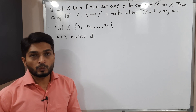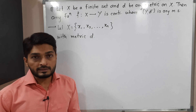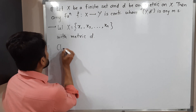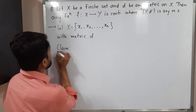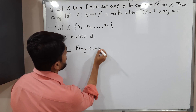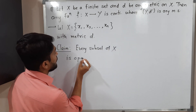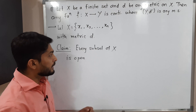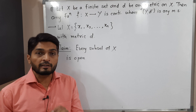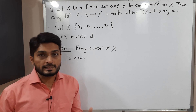Before proving this result we are going to prove one claim, which is very important to prove this result. So let us discuss that claim first and then we will go to the proof of the main result. My claim is: every subset of X is open. We have to prove that if you have any subset of this finite metric space (X, d), then it is definitely an open set. So let us take one subset of X and prove it is open.